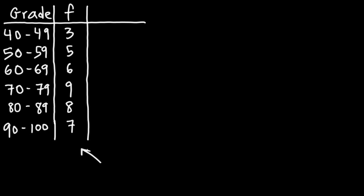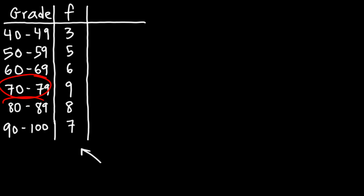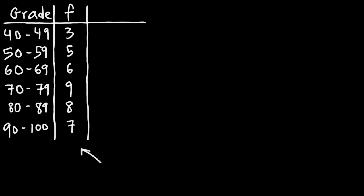What we have here is the grades of students with grade intervals of 40 to 49, 50 to 59, and so forth. 60 to 69 is a D, 70 to 79 is a C, 80 to 89 is a B, 90 and above is an A. Anything less than 60 would be an F in most schools. The second column contains the frequency, which tells us the number of students who scored in each range. For instance, there are six students who got a D on the exam.